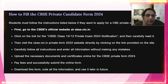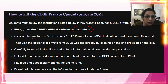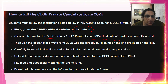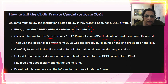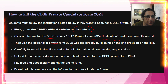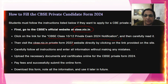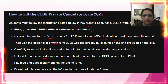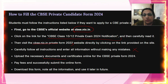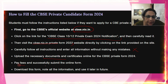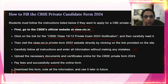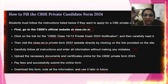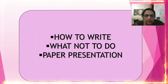For the form fill-up, use cbsc.nic.in. Carefully follow the instructions so that if you have a mistake, you can correct it. Upload all necessary documents — if you need a certificate for physically handicapped or a category certificate, make sure to upload it. After fee payment and successful submission, download your form and note all information. You will need it later for your admission card.